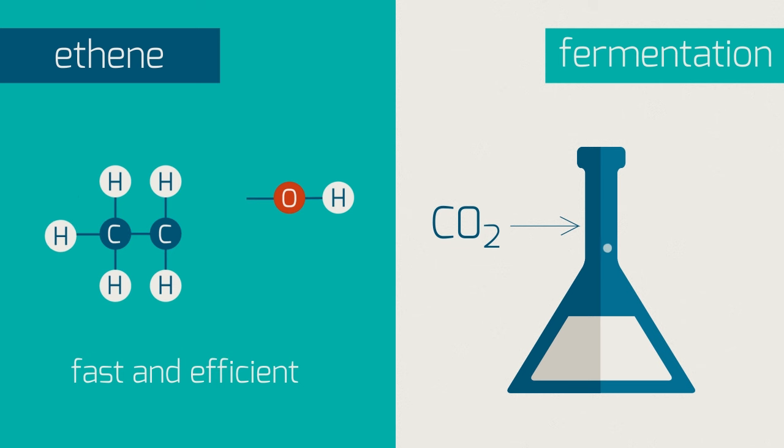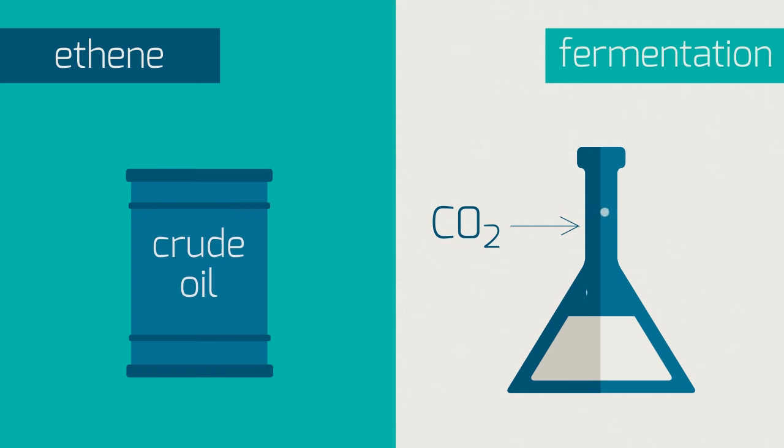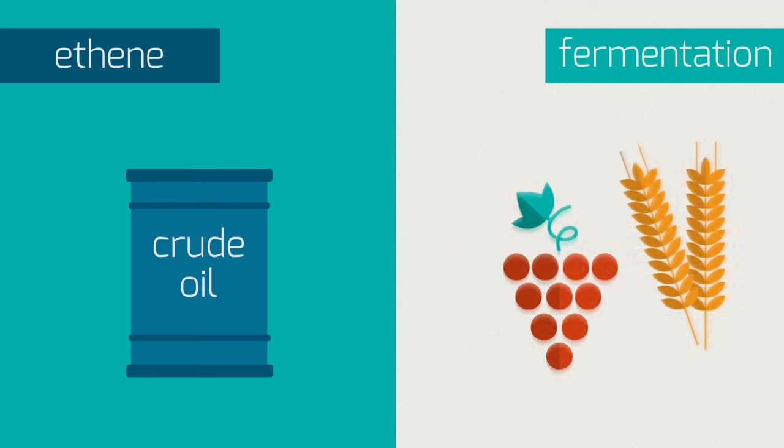But ethene is cracked from crude oil, which is a non-renewable resource, so we won't be able to carry on acquiring it this way forever. Plant sugars, on the other hand, are a renewable resource.